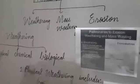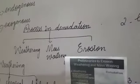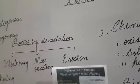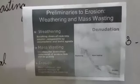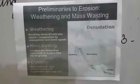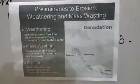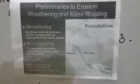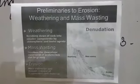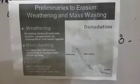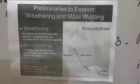Now, what are the processes of denudation? There are three processes of denudation: one is weathering, mass wasting, and erosion.